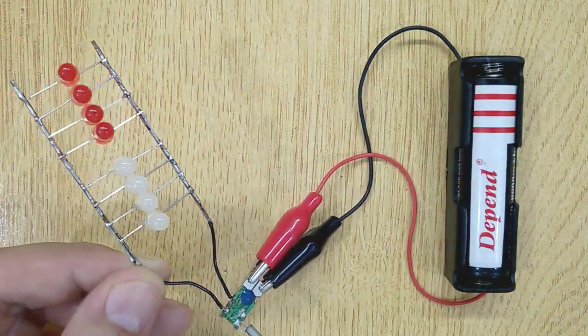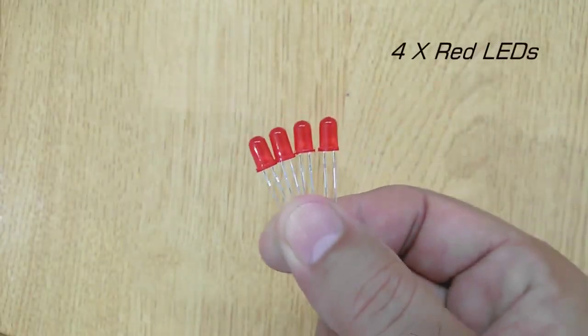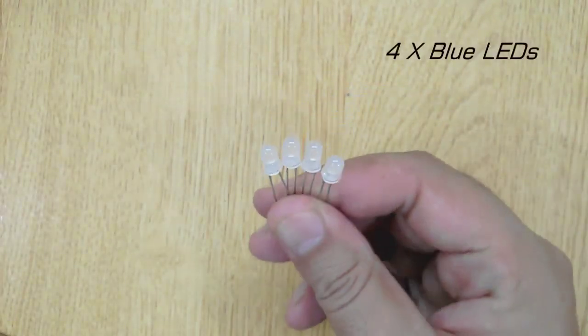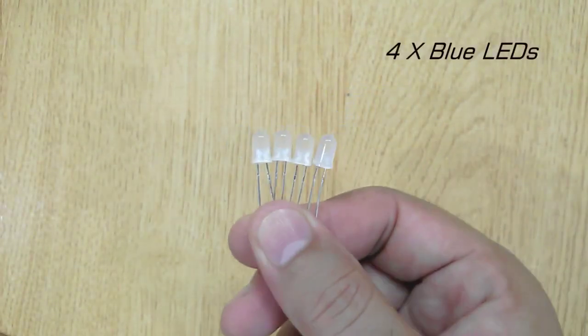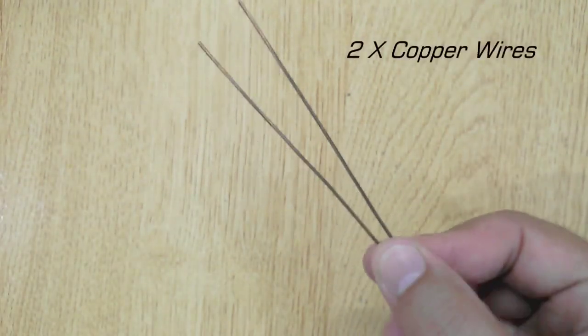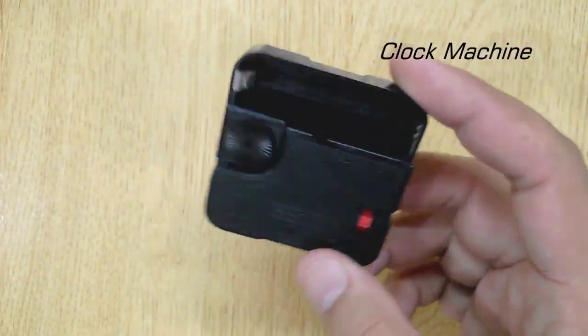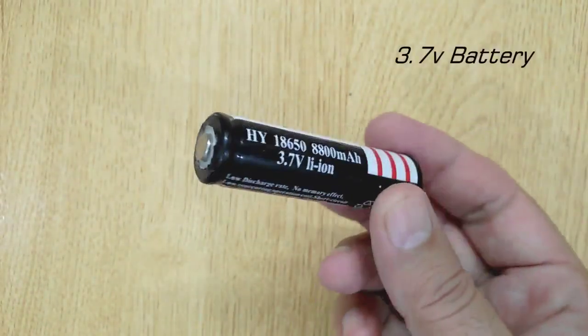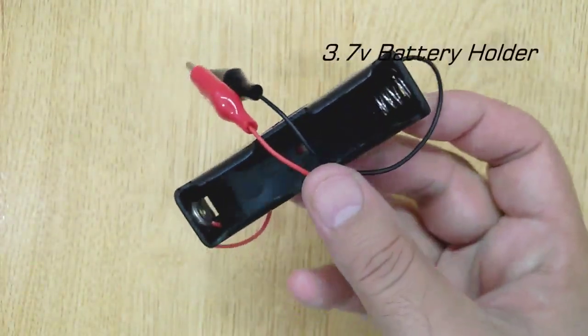For this purpose, you will need: red LEDs 4 pieces, blue LEDs 4 pieces, copper wires 2 pieces, old clock machine, 3.7 volt battery, and 3.7 volt battery holder.